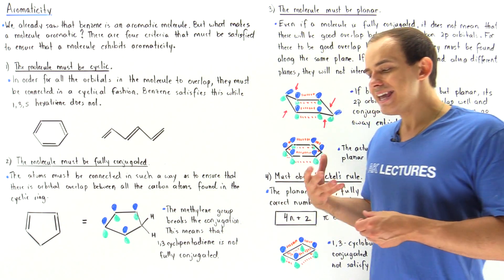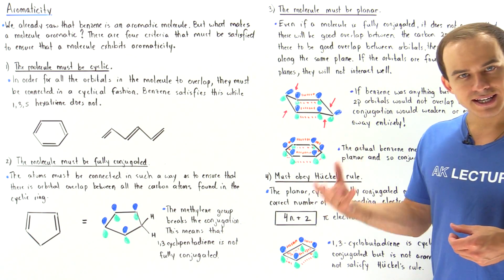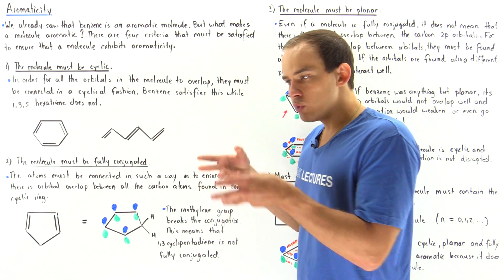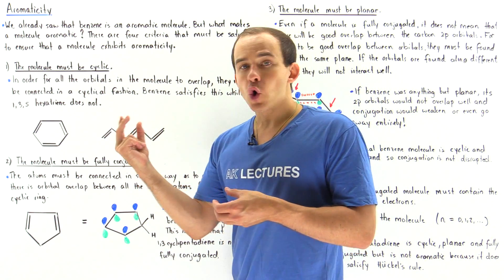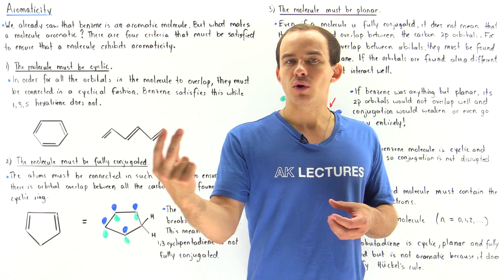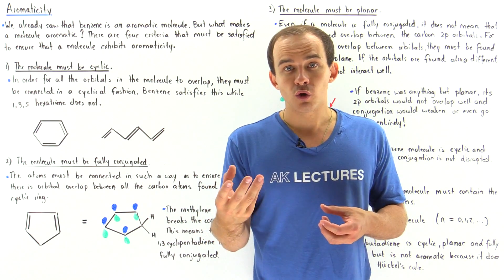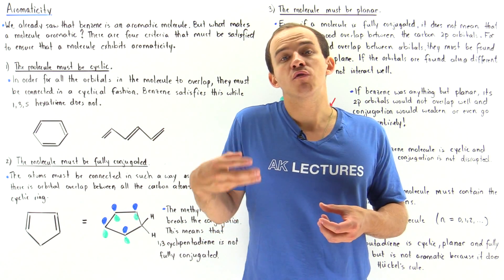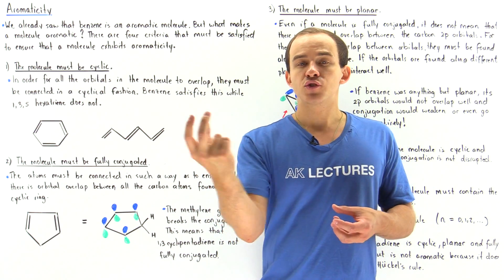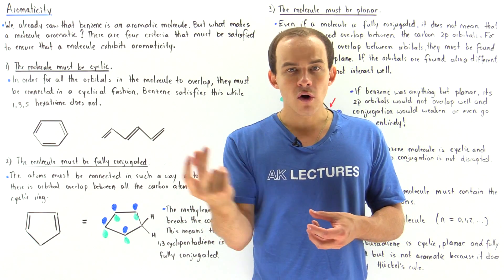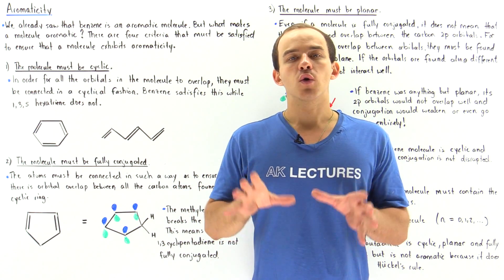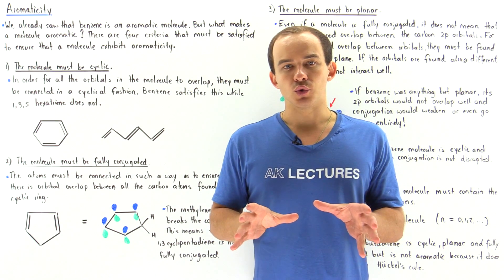What exactly is aromaticity? It's basically the ability within the molecule for all the 2p orbitals within our system to overlap well, distributing that electron density among all the orbitals and therefore stabilizing our molecule.